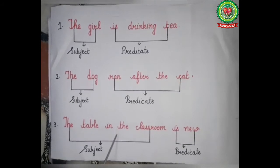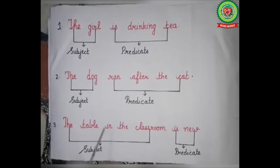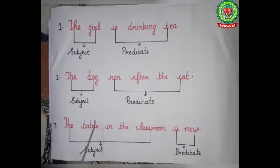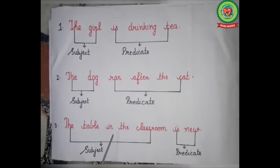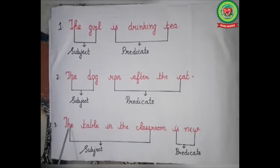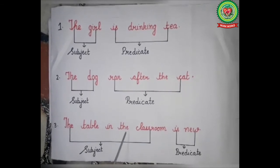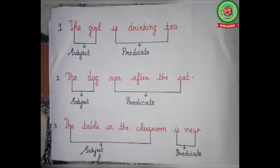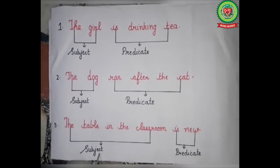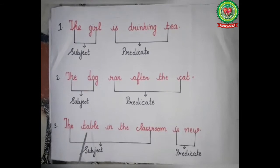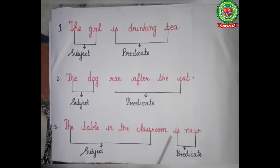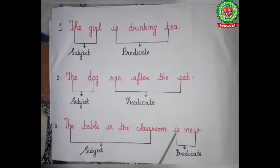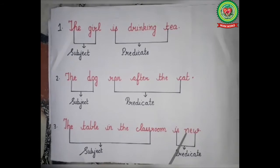Next example: 'The table in the classroom is new.' About whom we are talking in the sentence? The answer is 'the table in the classroom,' so 'the table in the classroom' is the subject of the sentence. What we are talking about the table in the classroom? The answer is 'is new,' so 'is new' is the predicate of the sentence.